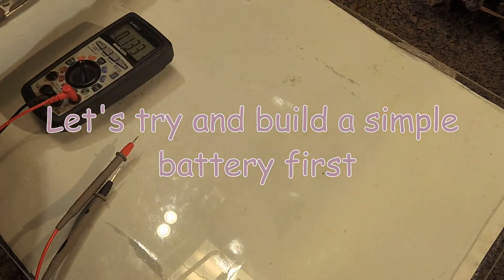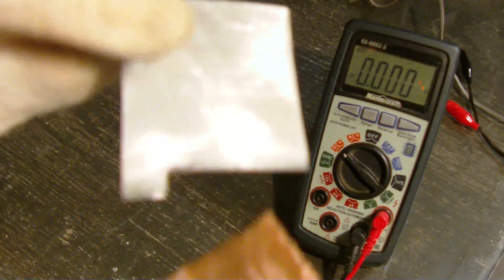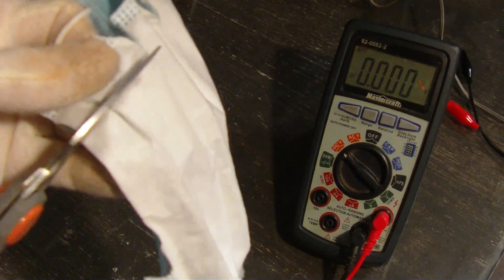Copper, aluminum - this was cut from a copper pipe, this is just from some siding. Let's cut out a separator.